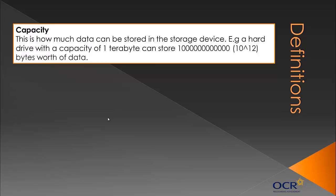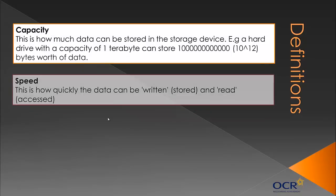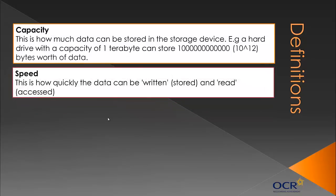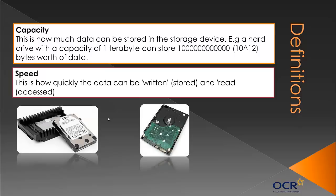Capacity is simply how much data can be stored in the storage device — pretty simple. Speed is how quickly the data can be written, which means stored, and read, which means accessed. We often talk about a read-write time.